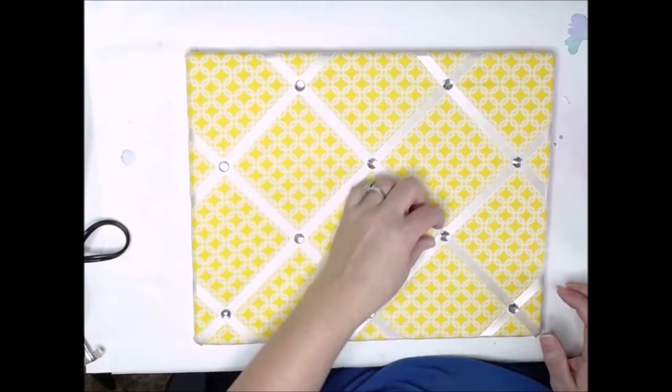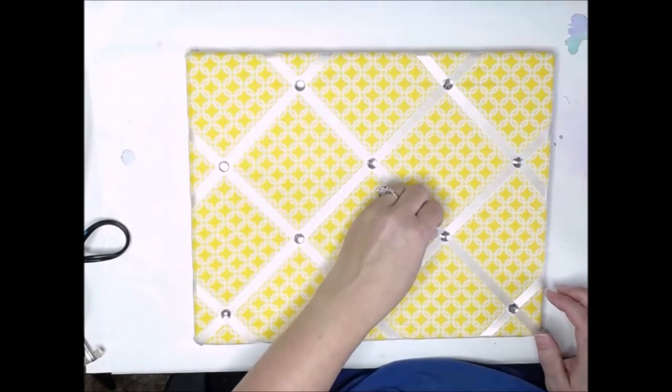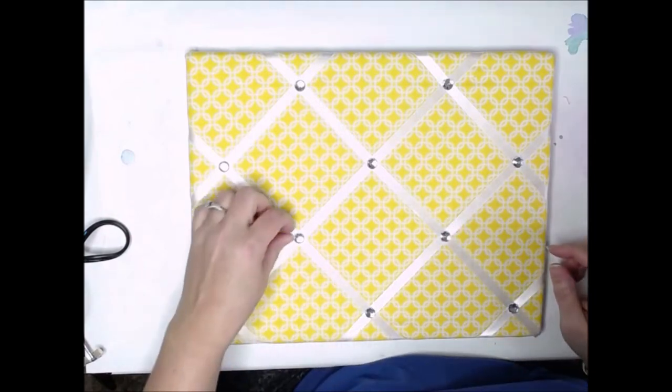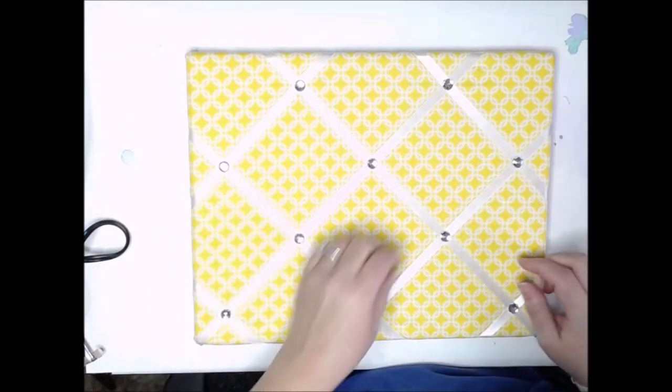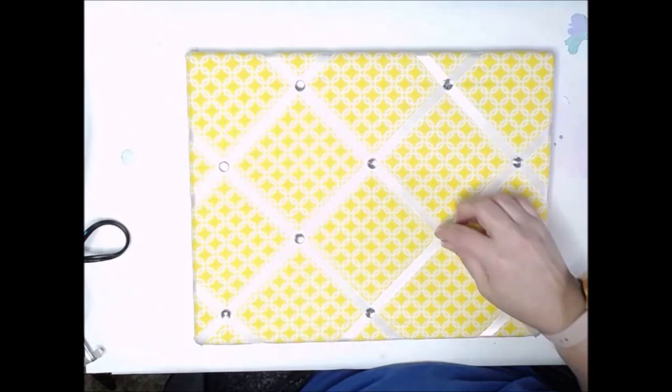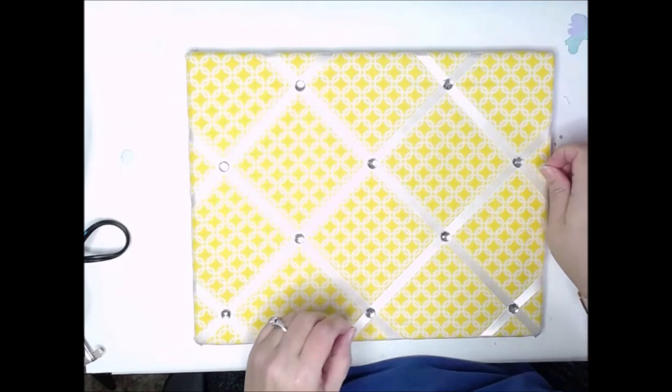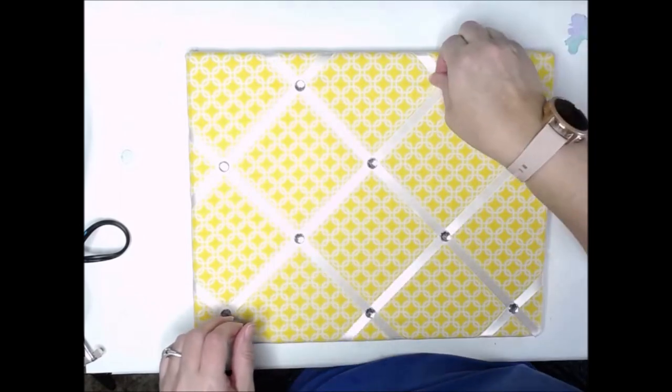And once those are all tightened down and the glue is dry, you just go back and pull any of those loose glue strings. Get those off of there. And you are done.